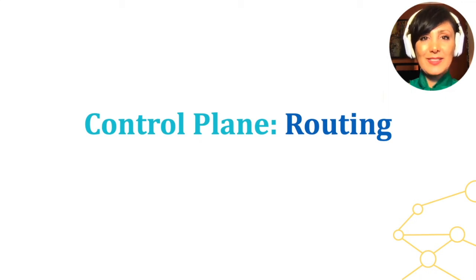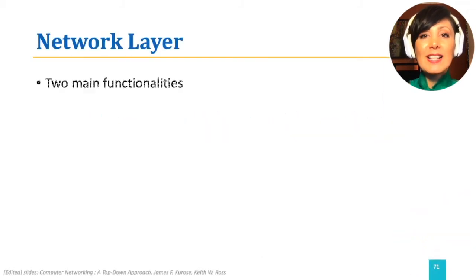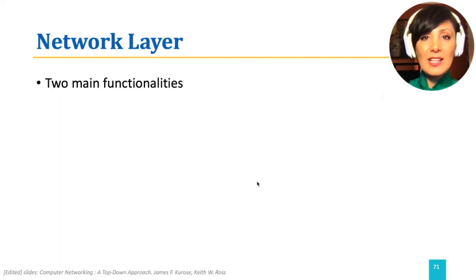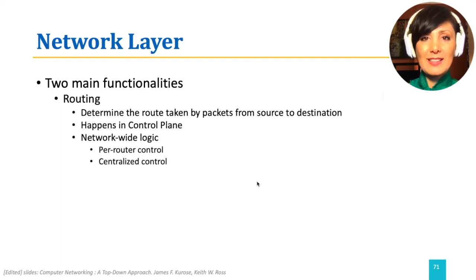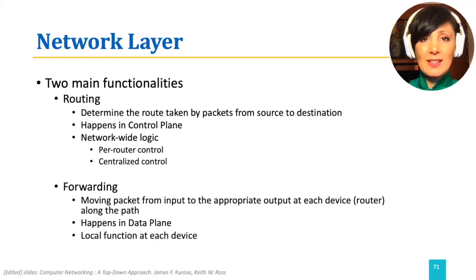We are finally here at this exciting point, exploring the control plane function of routing. The network layer consists of two main functionalities: routing and forwarding. Routing, which has a network-wide logic, happens in the control plane.